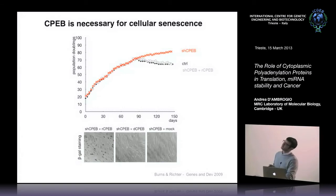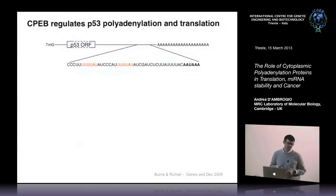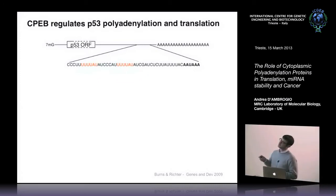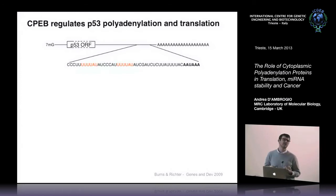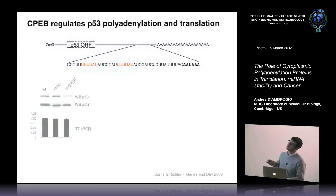Why does it happen? Because CPEB regulates the P53 transcript and its translation. Here is a scheme of the P53 transcript — this is the 3' UTR, here you have the poly-A site, the regular hex, and just upstream are the CPE elements. These are bound by CPEB and promote translation. In fact, if you silence CPEB with a short hairpin, there is a decrease in P53 protein expression.